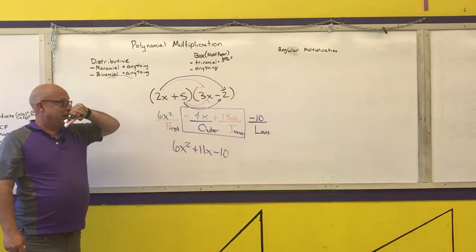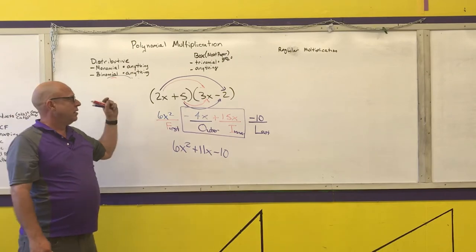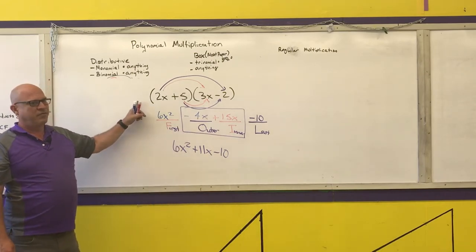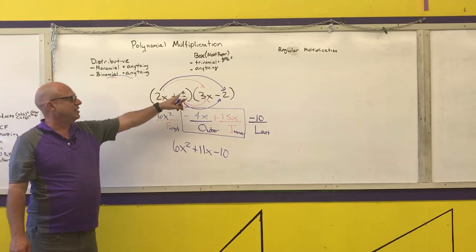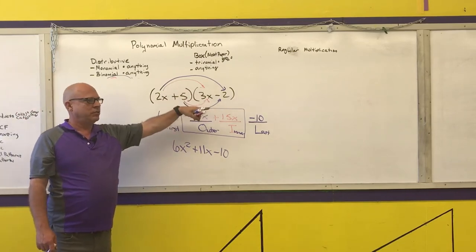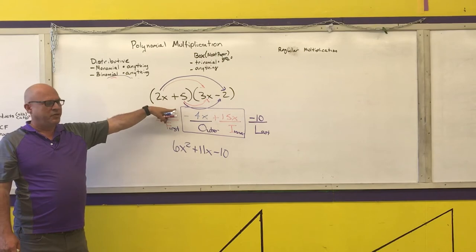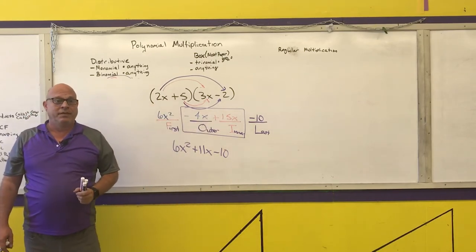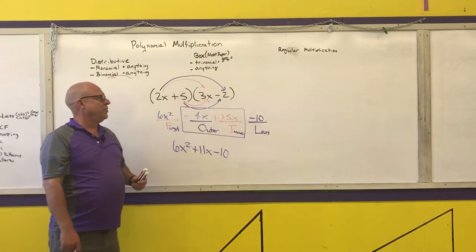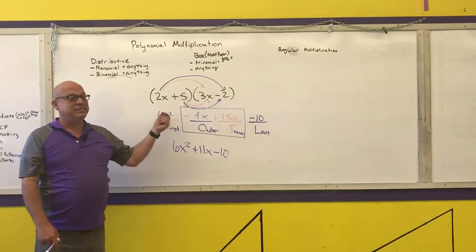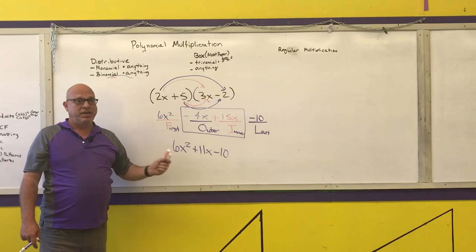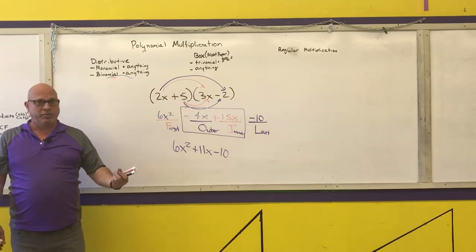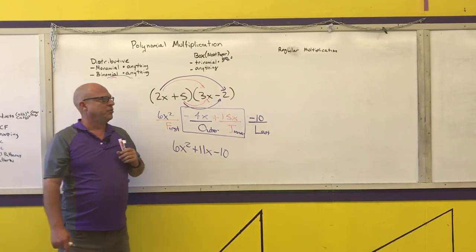If you are in 8th grade math, algebra 1, or geometry and using the FOIL method, I either need to see the arrows on your distribution or I need you to write FOIL so I know what method you're doing. If you are in algebra 2 or beyond, I don't need to see any work to go from the problem to the answer, and I'll show you how I do these problems without showing work.